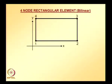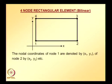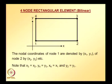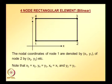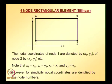Let us take a four-node rectangular element. A four-node rectangular element is shown in the figure. The coordinates of node 1 are denoted by x1, y1, and of node 2 by x2, y2. Similarly for node 3, node 4, and so on. Note that the x-coordinate of node 4 is the same as the x-coordinate of node 3, and the y-coordinate of node 4 is the same as that of node 3. Nodes can be identified using the coordinates or, for simplicity, nodal coordinates are identified by the node numbers.